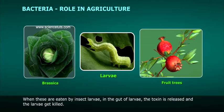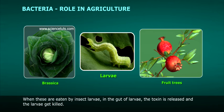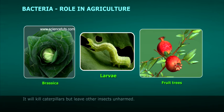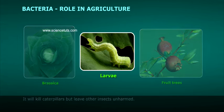When these are eaten by insect larvae, the toxin is released in the gut of the larvae and the larvae get killed. It will kill caterpillars but leave other insects unharmed.